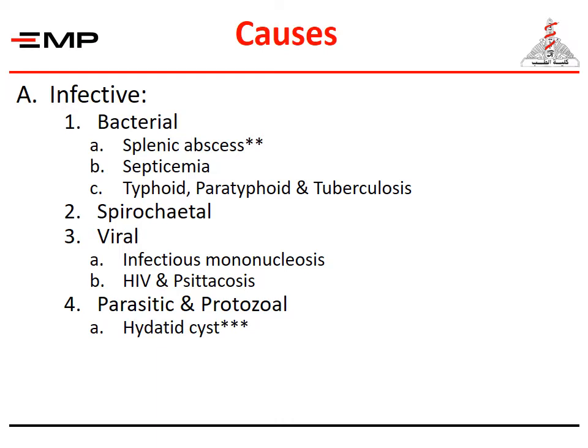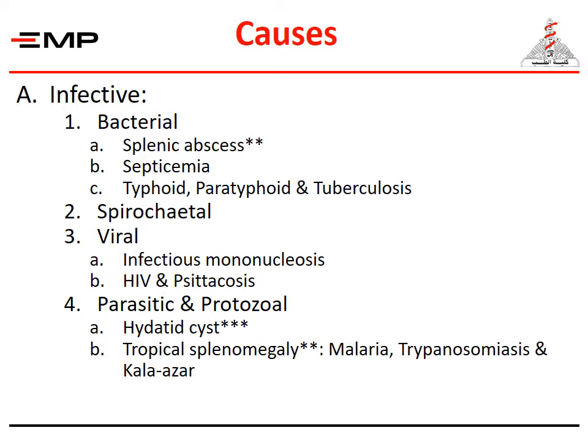Hydatid cysts may affect the spleen as well as the liver, or the spleen only. Splenectomy is indicated in conjunction with treatment of cysts elsewhere. Tropical splenomegaly is a term used to describe the splenomegaly of variable parasites or protozoa common in tropical areas. When the spleen is huge and severe hypersplenism develops, splenectomy may be indicated. Egyptian splenomegaly due to schistosomiasis is rarely an indication for splenectomy at present.